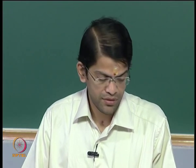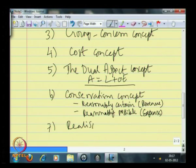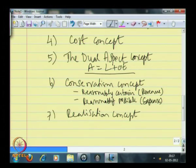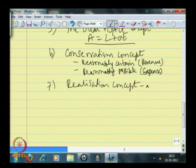You will understand that when it comes to recognizing revenues, it has to be recognized only if it is reasonably certain that the revenue can be generated, and contrary to that, expenses have to be recognized when there is some possibility that they would be incurred. This is the concept of conservatism. Conservatism is about timing, and the next concept is the realization concept, which is more about the amount.